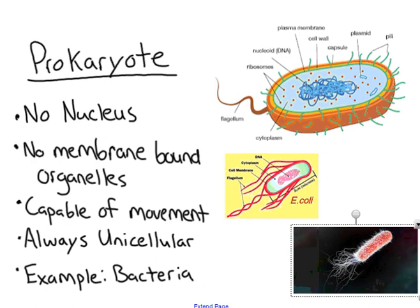In human cells — which are not prokaryotes — we have mitochondria, lysosomes, and all these complex organelles. Prokaryotes don't have any of those complex structures inside their cells. They don't have mitochondria or any of the organelles that perform specialized functions.